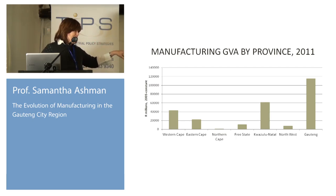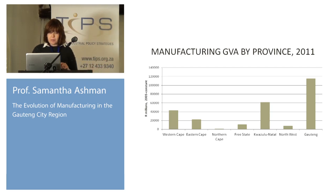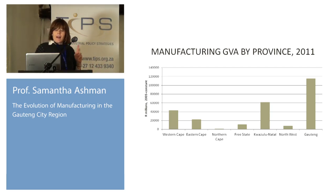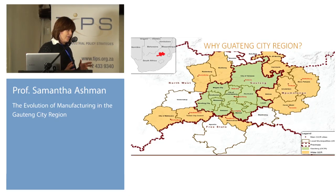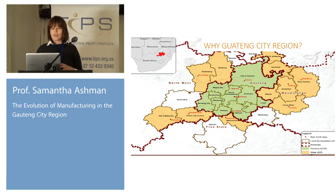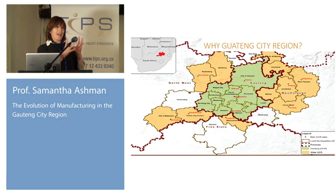This is just GVA across manufacturing, South Africa as a whole. Clearly petroleum products, chemicals, rubber and plastic, metals, metal products, machinery and equipment are still way out in the lead.